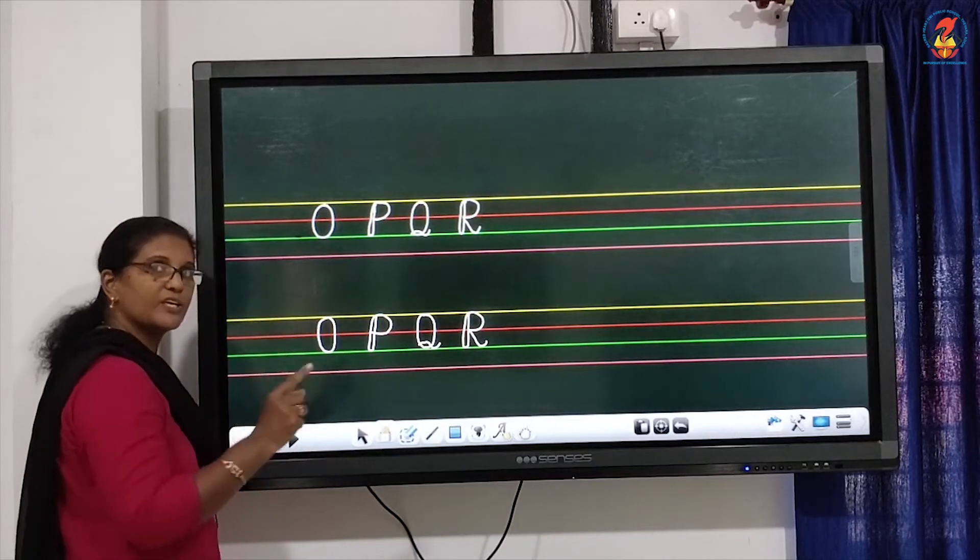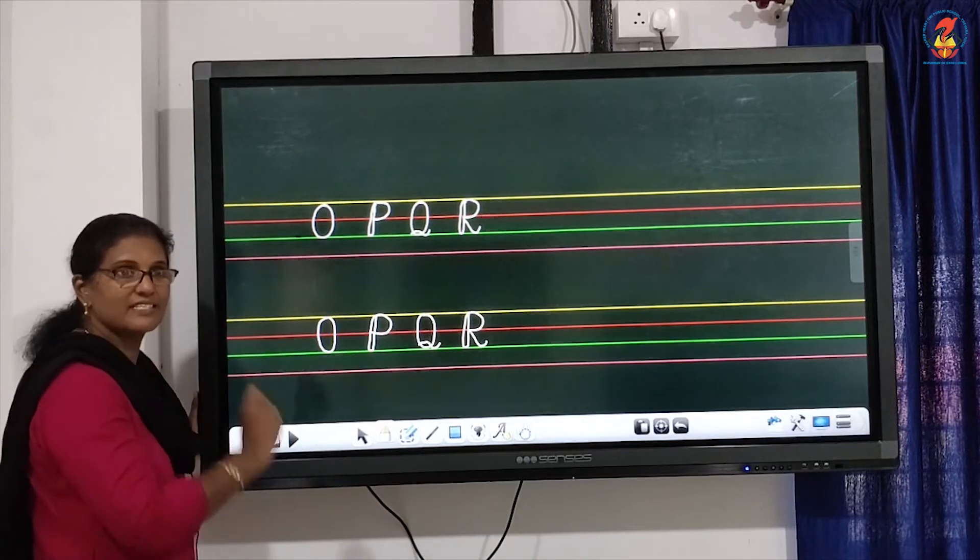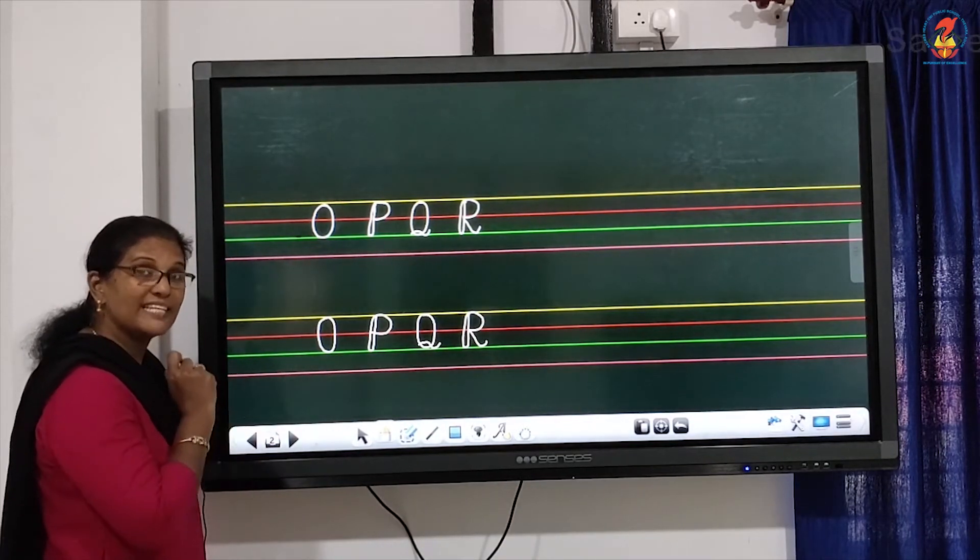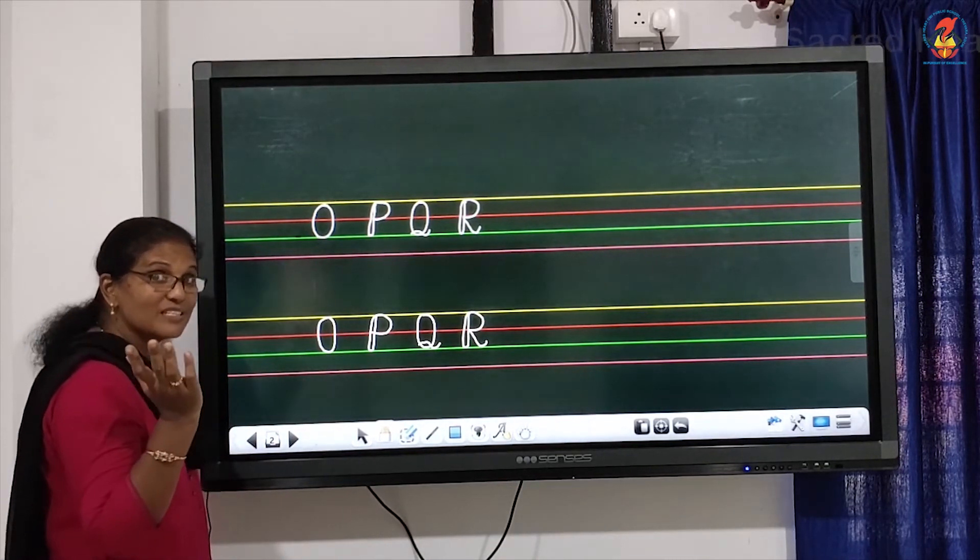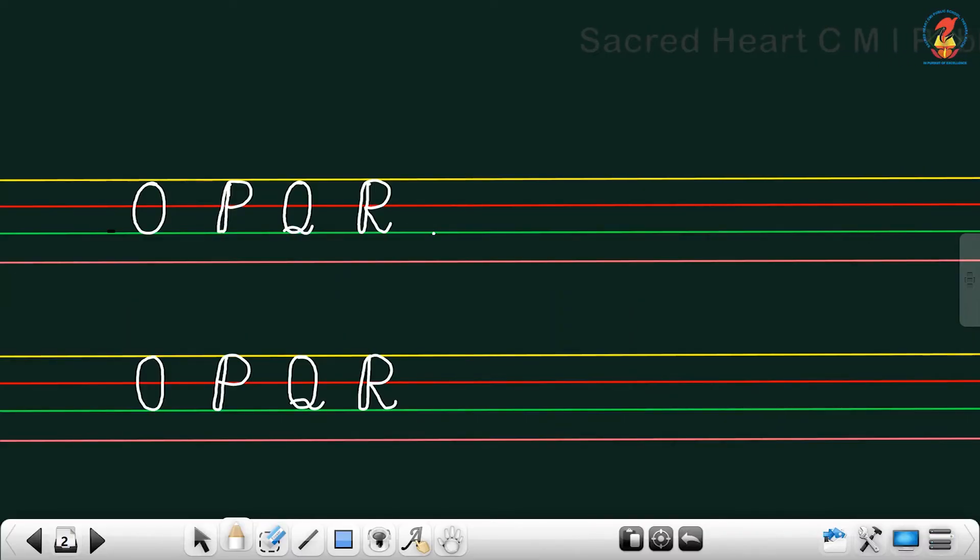Next, O, P, Q, R. Yes, S. S for sister, S for switch, S for songs. Right. It starts on the third line here. It goes up to the first, take a small curve and a big curve. Then end it up on the slanting line which you started.